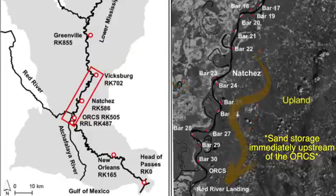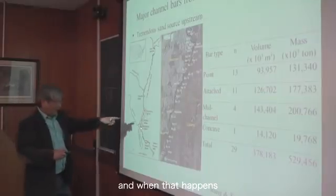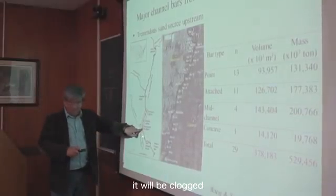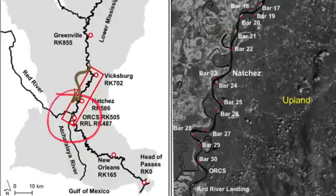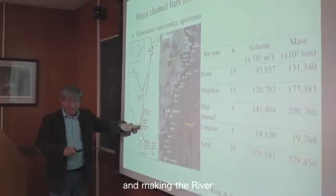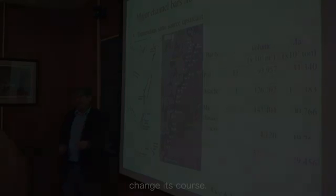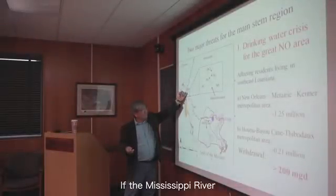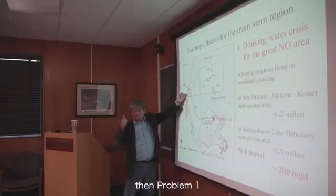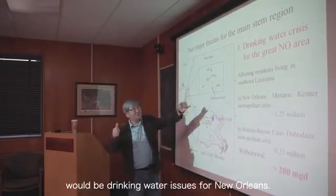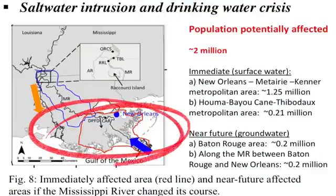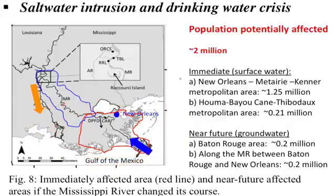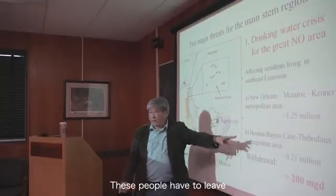We found 400 million cubic yards of sand — a tremendously large amount. This sand would essentially move downstream, clog the channel, and because of the higher elevation, cause the river to change its course. If the Mississippi River suddenly switches to the Atchafalaya, the entire greater New Orleans area — including New Orleans — has about 1.5 million people living there. These people have to leave.